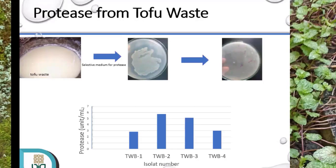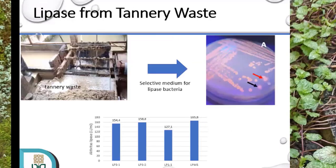Ini pengalaman dari yang sudah kami kerjakan. Yang pertama ketika saya melakukan isolasi protease dari limbah tahu, setelah dikultur dalam medium yang selektif, kami menemukan beberapa isolat. Kalau ini menggunakan medium milk agar, ditunjukkan dengan adanya zona jernih di sekitar koloni, artinya dia positif memproduksi protease. Kemudian yang selanjutnya itu isolasi lipase dari limbah penyamakan kulit, yang baru saja dilakukan oleh mahasiswa kami. Kalau ini menggunakan media selektifnya rhodamine B olive oil, dan hasil positif atau bakteri lipasenya itu ditandai dengan munculnya pendar warna orange seperti yang ditunjukkan di anak panah itu.